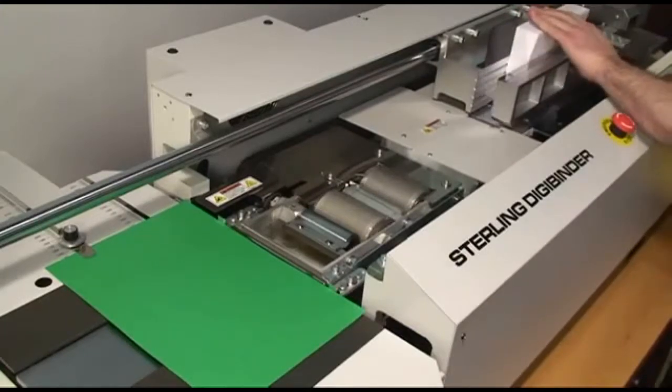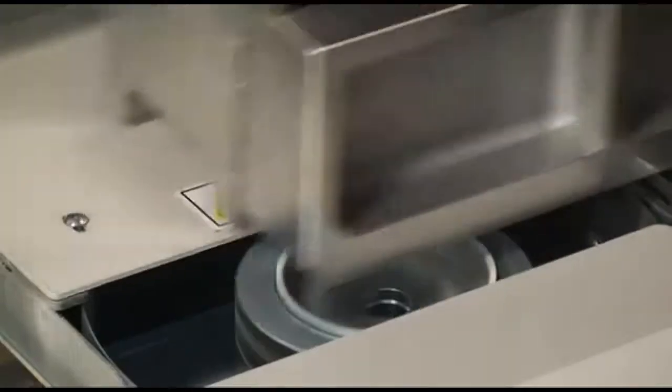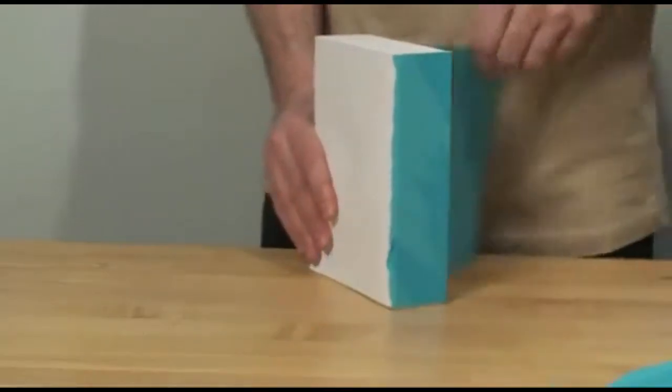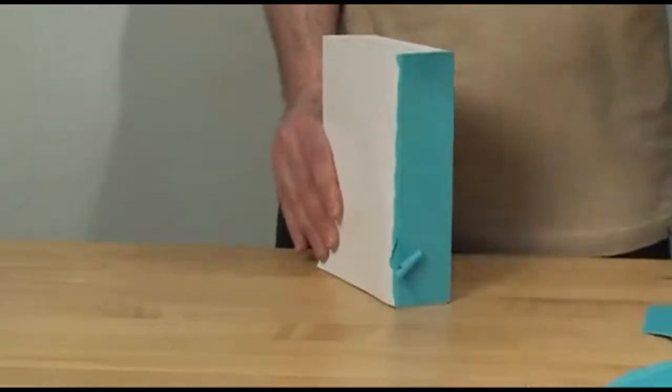The DigiBinder employs a unique roughing blade that not only notches, but roughs the entire spine for gluing. This way, the glue seeps in through the entire backbone of the book, increasing its strength.